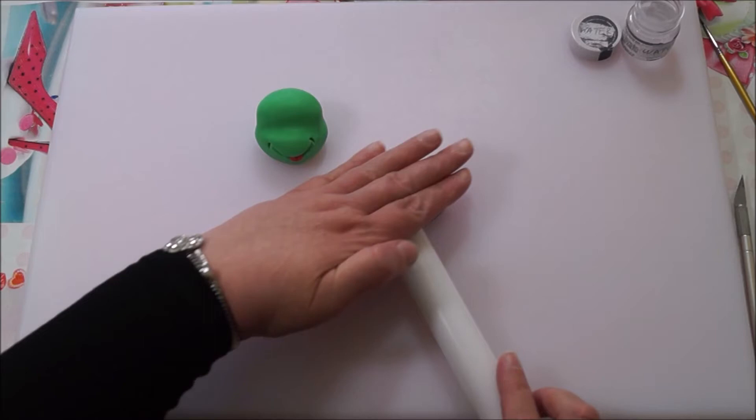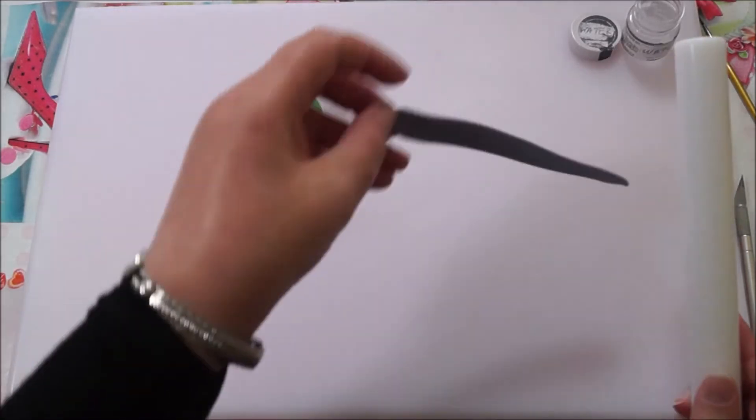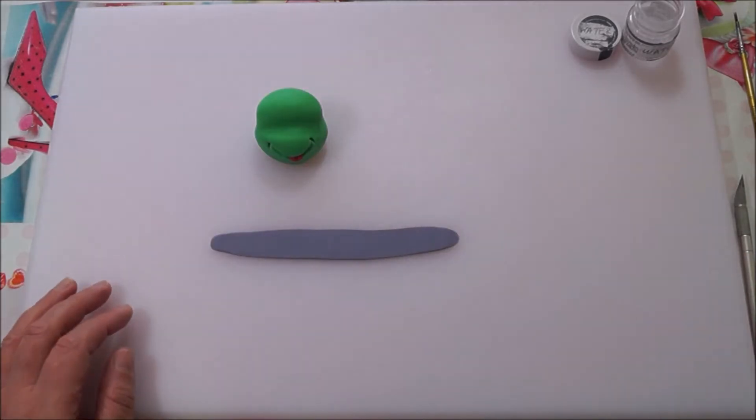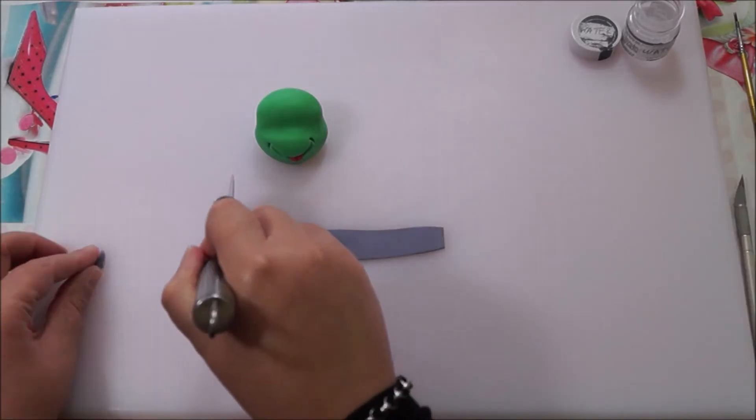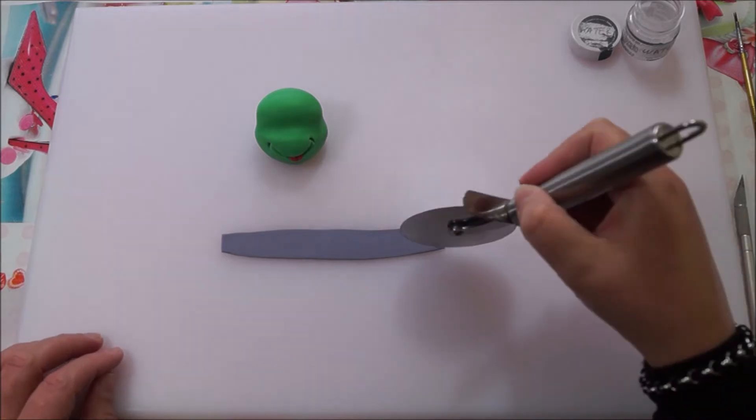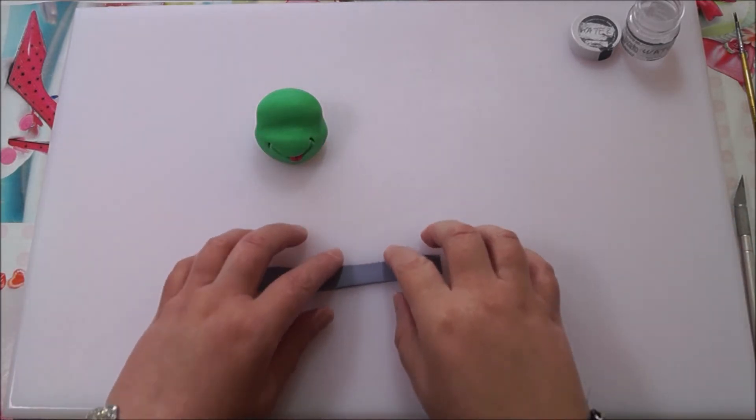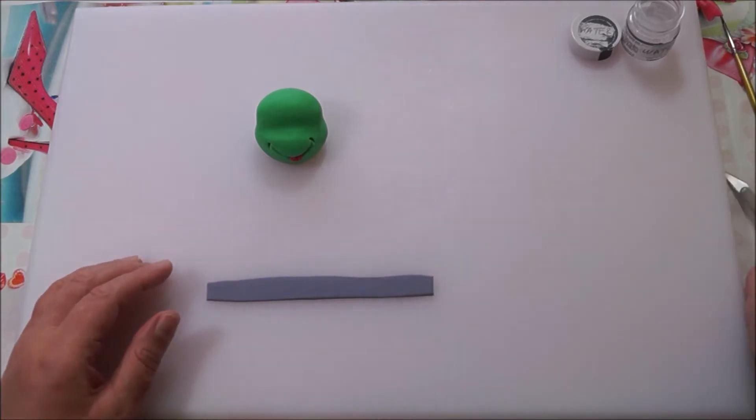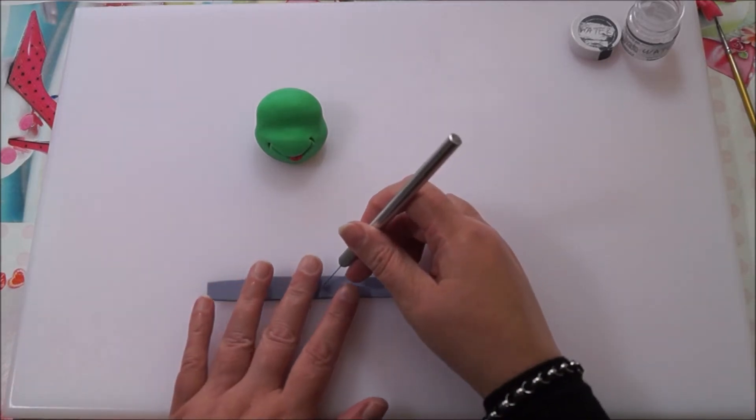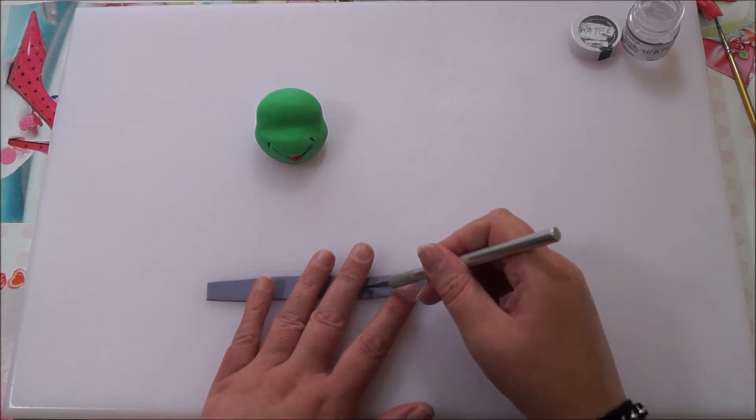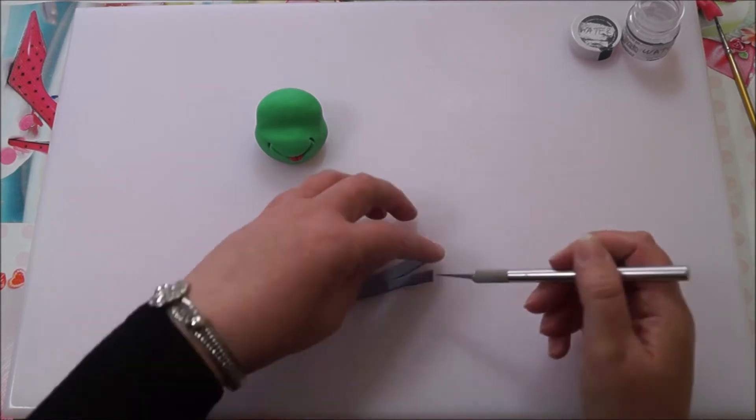Take some purple fondant to make the headband. Roll it out into a strip and use your pizza cutter to straighten the edges. Take your exacto knife and cut it to shape—two circles in the center with long strips to the left and right.